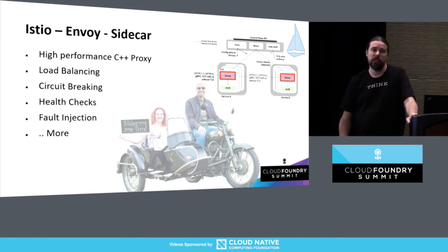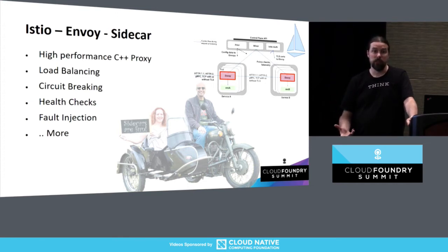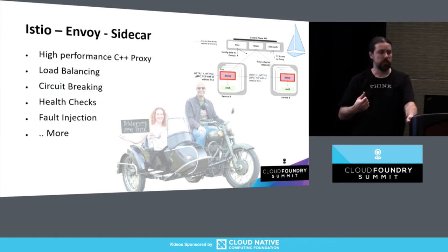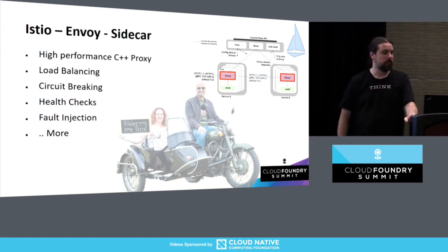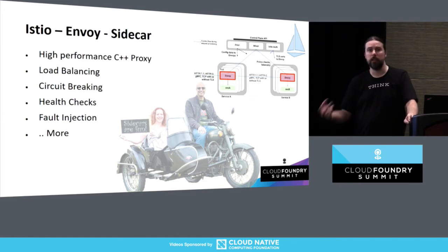Istio is delivered to the service mesh via a sidecar mechanism — the container you push out with your app gains another one. That Envoy sits next to it, takes over all the traffic from your service, and listens for configuration information from Mixer. Pilot handles service discovery communication and how services should talk to each other. These are extensible pluggable mechanisms. Istio was designed to be neutral, though the first implementation everybody's familiar with runs on Kubernetes. CF is also looking at integrating Istio into their stack.